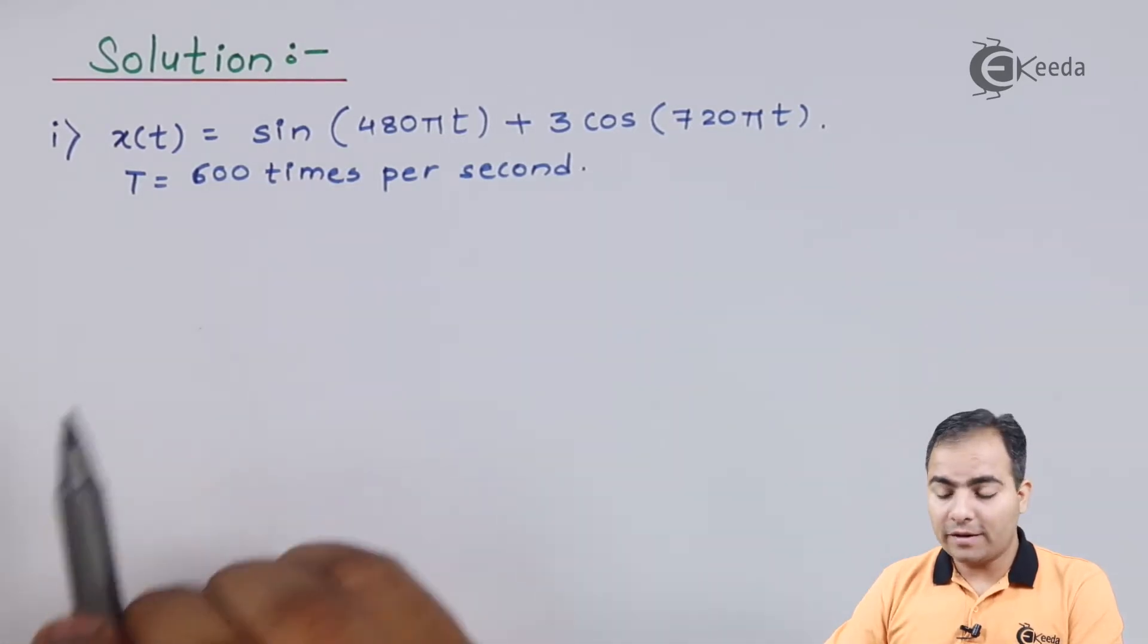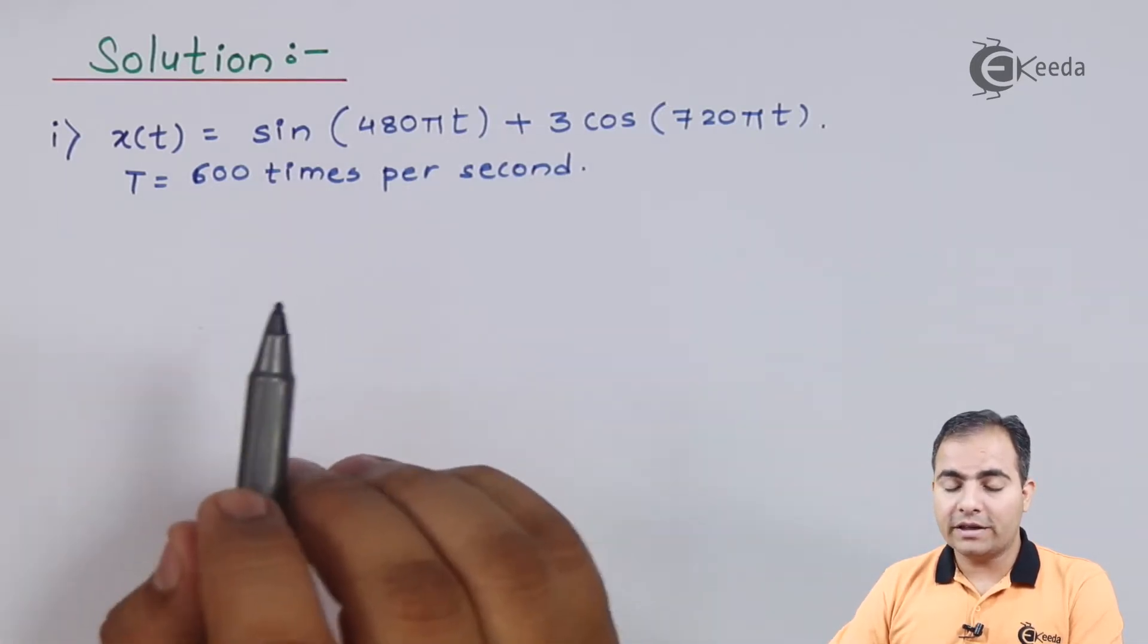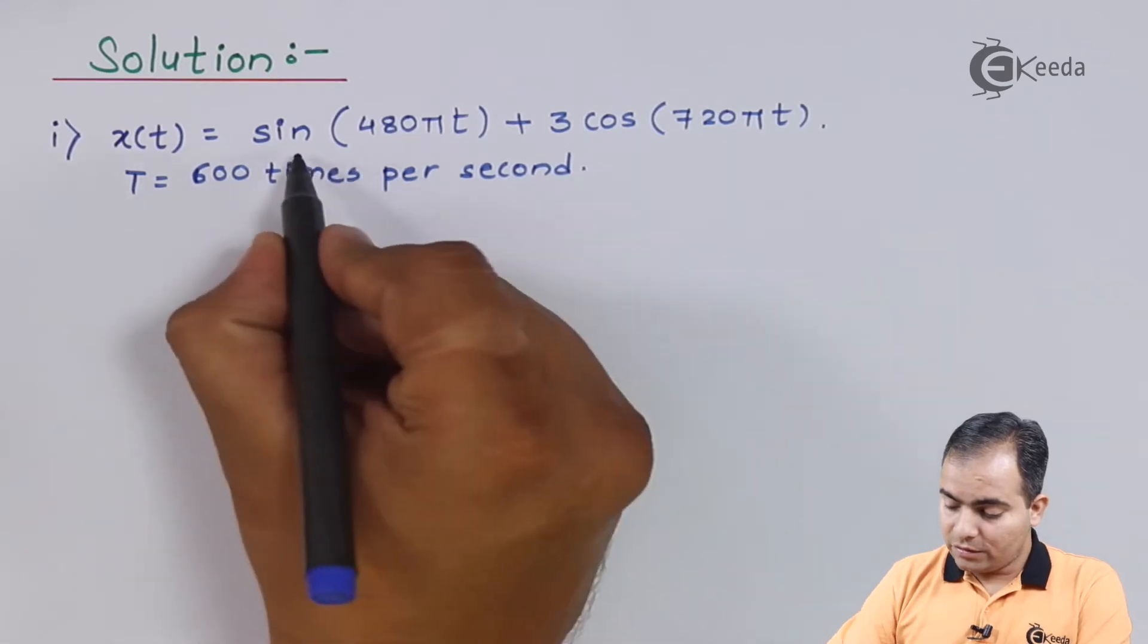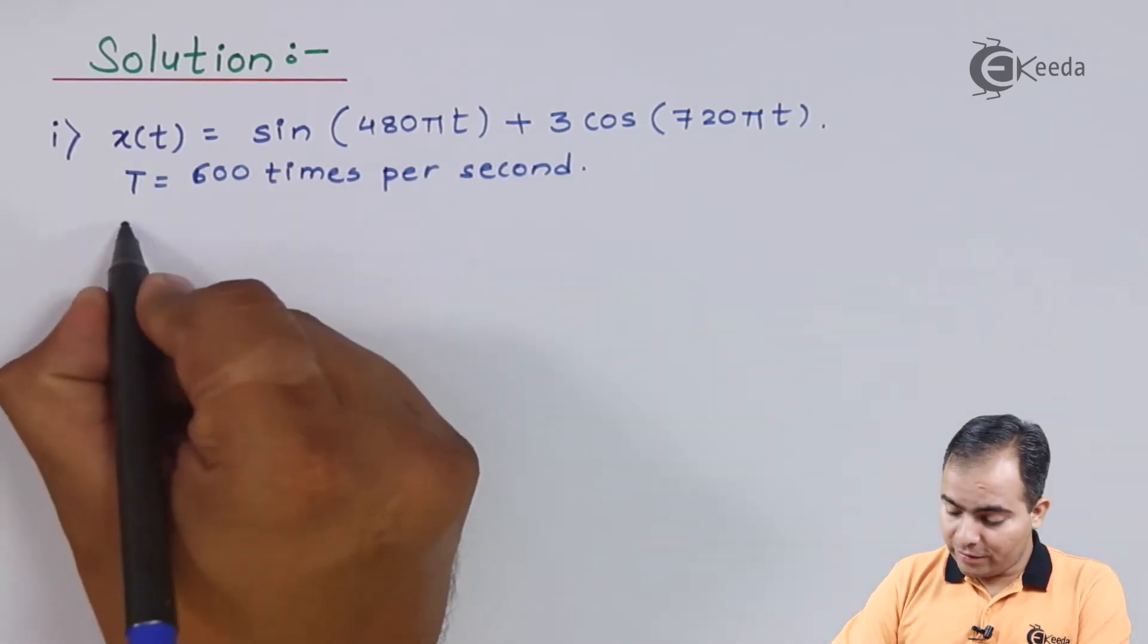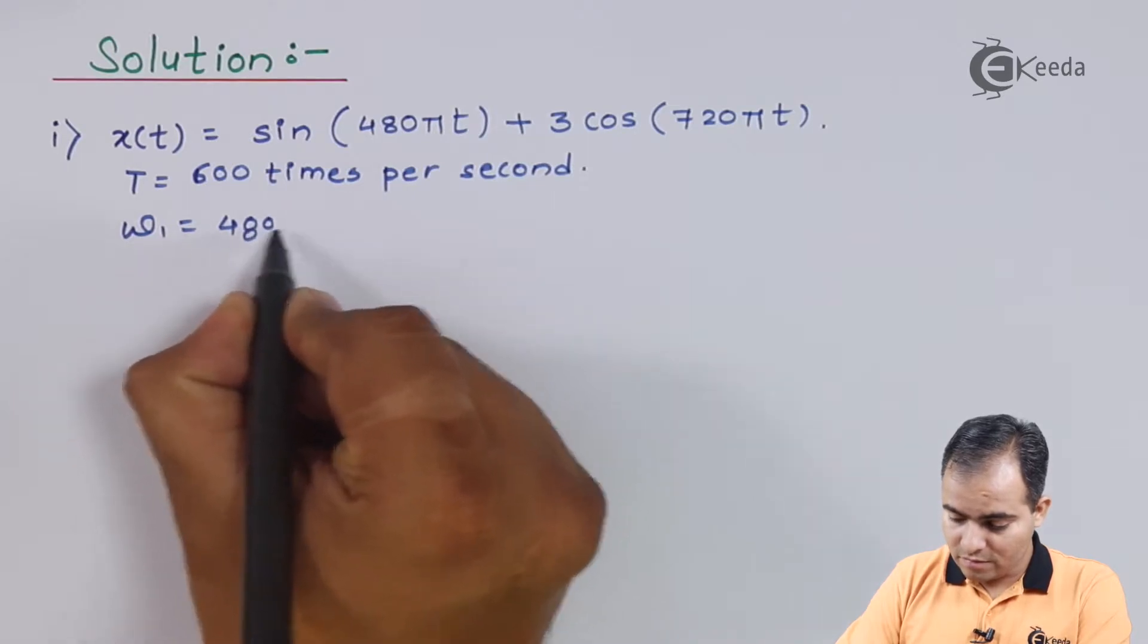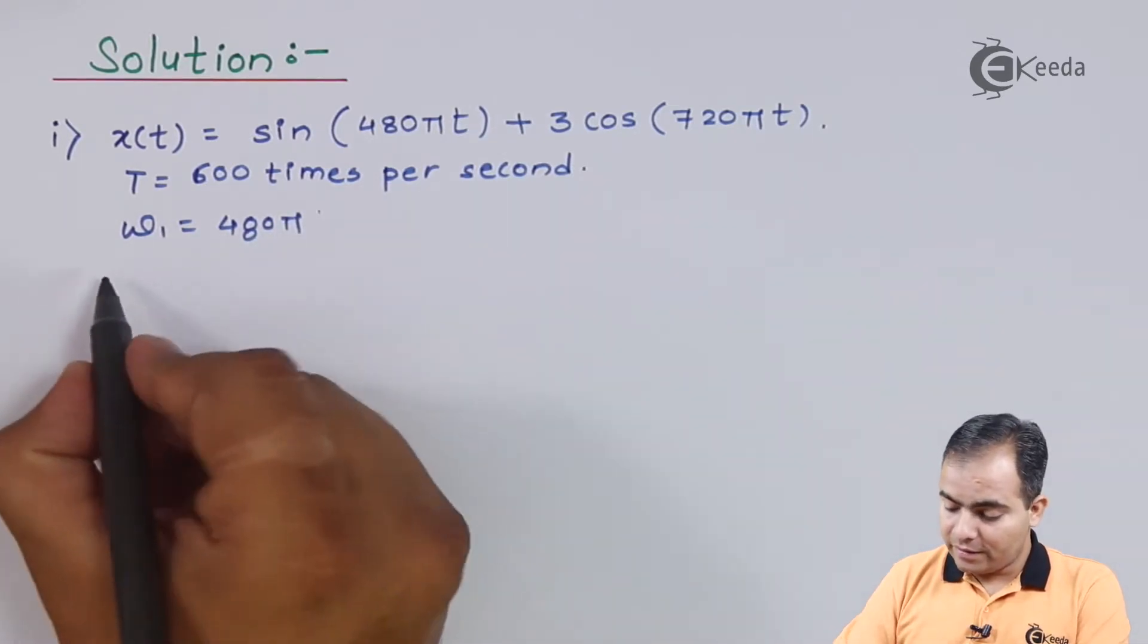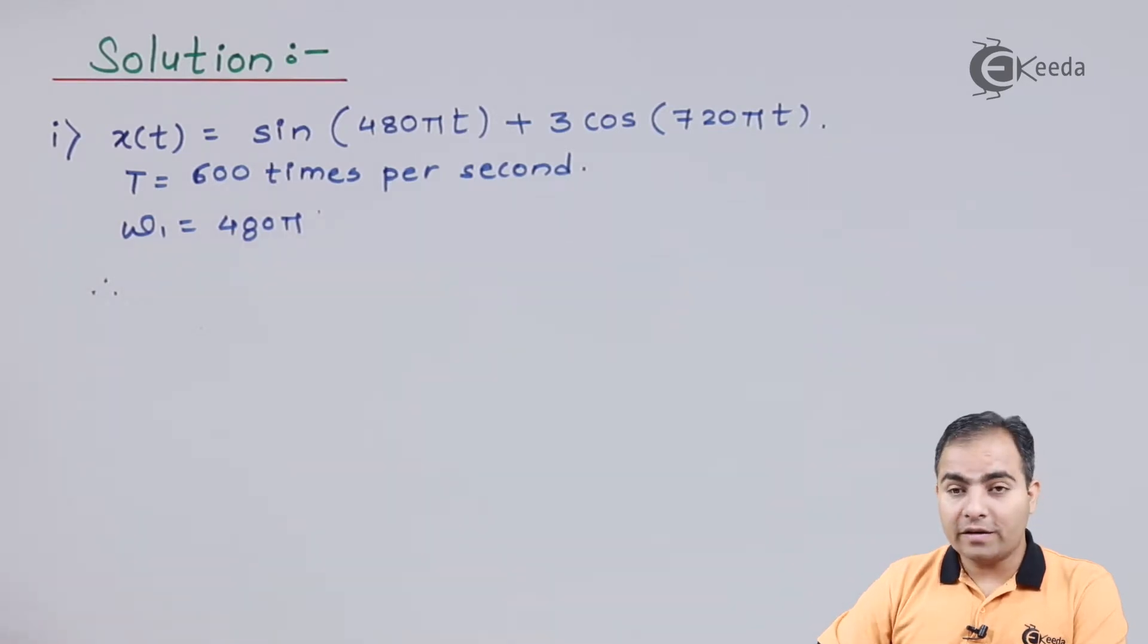We will compare both parts with the standard form of equation, sin(ωt). In the first part, my omega value is 480π. What is omega? Omega is nothing but 2πf.